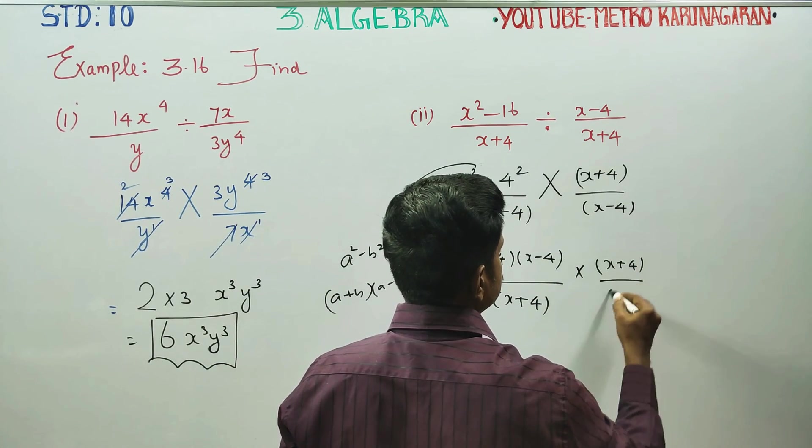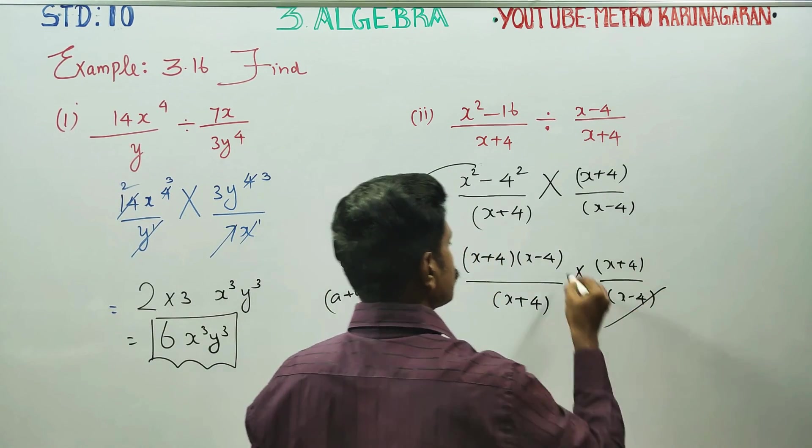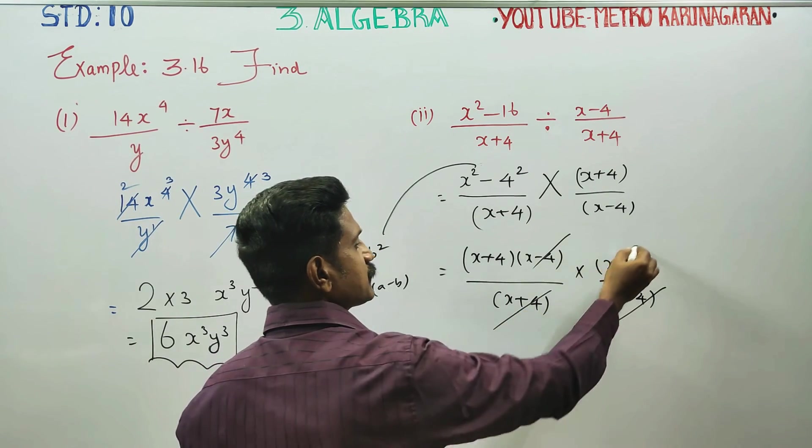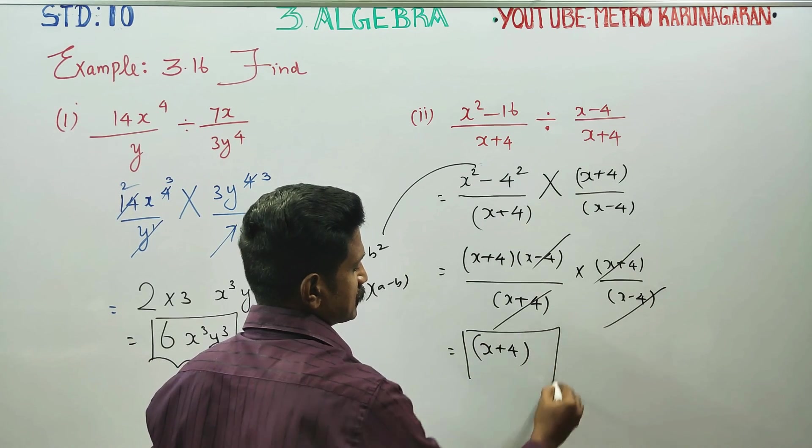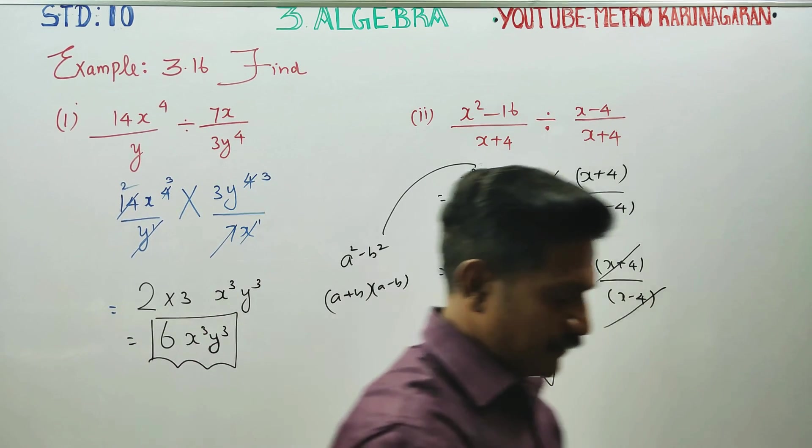Times x minus 4. x plus 4 cancels. Balance is x plus 4. This is your final answer. Thank you.